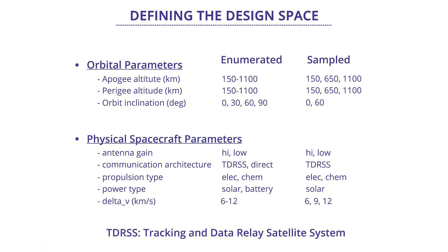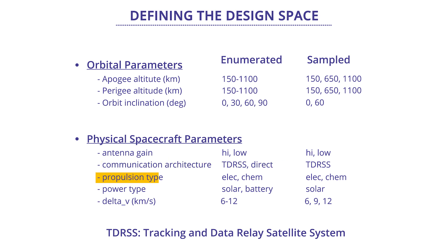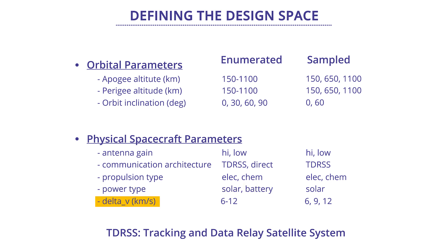Picking these discrete levels results in 18 particular orbital combinations for our alternatives. This is a much smaller subset than the full range that was enumerated. Our physical spacecraft parameters have a number of categorical variables. For example, antenna gain, enumerated as high and low; communication architecture, enumerated as TDRS or direct communications; propulsion type, enumerated as electric or chemical; power type, enumerated as solar or battery; and delta-V, enumerated in kilometers per second across the range 6 to 12.